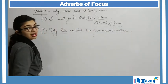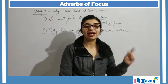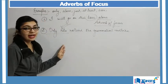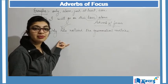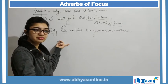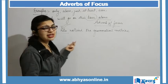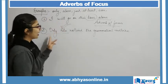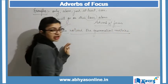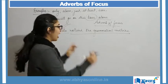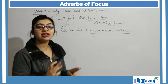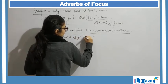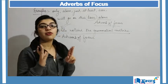Another example: Only Rita noticed the grammatical mistake. When I say 'only Rita', this is again the focus point — out of all the students or all the people, I am just focusing on Rita. Why? Because she has done something exceptional or extraordinary which the others have failed to achieve. She noticed a grammatical mistake which the other people did not notice, and it is only Rita. That is why we are focusing just on Rita, so 'only' is again my adverb of focus.